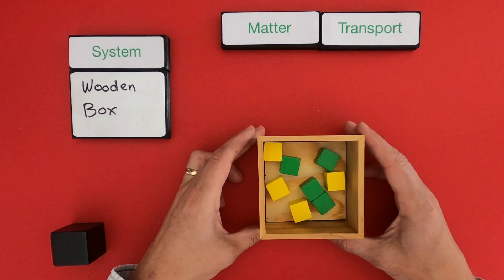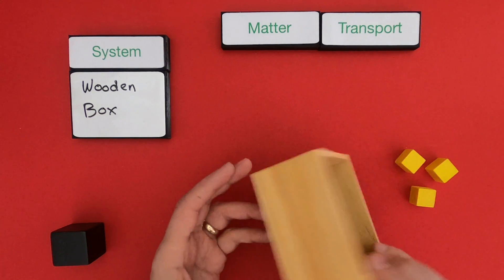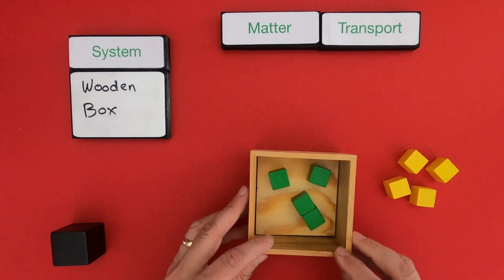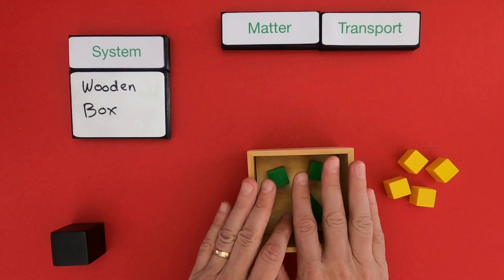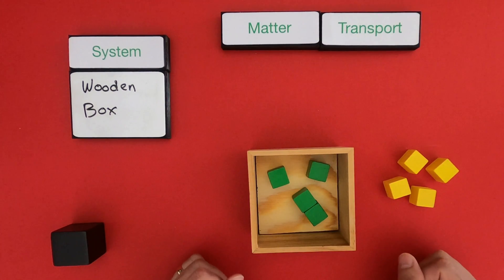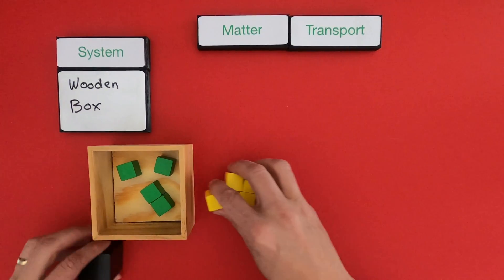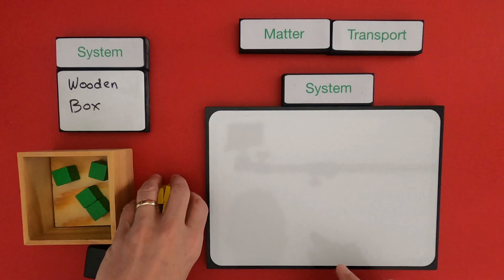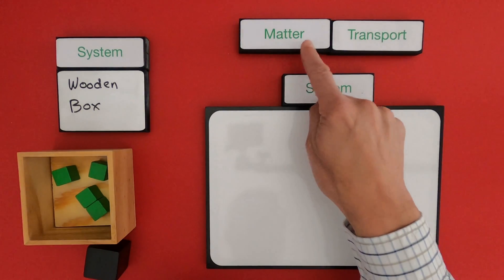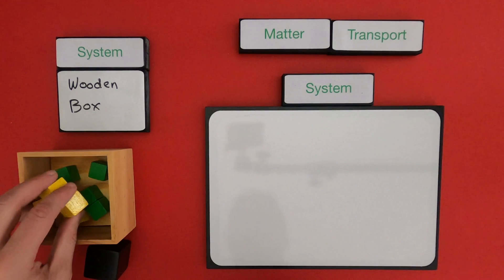These are all now in the system and then we dump it out. So we had matter that was outside the system, then matter that's inside the system, and then some of that matter has left the system. Let's get out and define our system box. What we're trying to look at and determine is how matter is transported within the system.